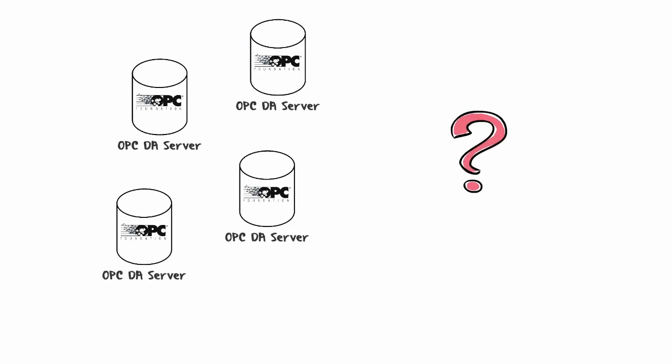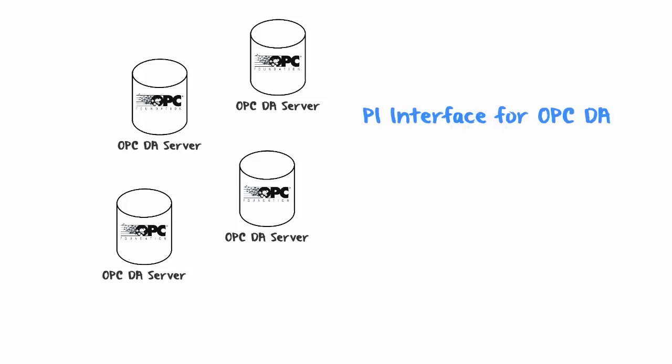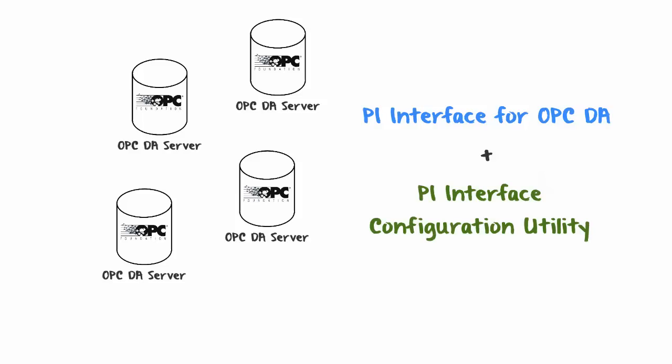If you have multiple OPC DA servers, you do not need to install the PI Interface for OPC DA multiple times. All you need is a single PI Interface for OPC DA installation, and you configure multiple instances of it. To do that you need the PI Interface Configuration Utility. And even if you only have a single OPC DA server, you will still need the PI Interface Configuration Utility, since this is the GUI used to create, configure, and maintain instances of the PI Interface for OPC DA. You will need to install both of these components.